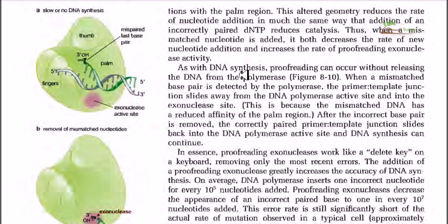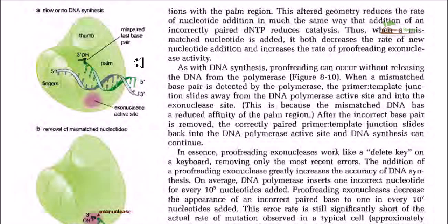Why is it called proofreading activity? Just like a proofreader in a printing agency corrects spelling mistakes before a copy is printed, in DNA replication the cell must ensure that future generations receive completely healthy DNA. The DNA polymerase enzyme checks for damage made during the replication cycle, and if it finds a problem it can reverse, delete erroneous nucleotide sequences from the new strand being synthesized, and then re-synthesize using the right type of nucleotides.